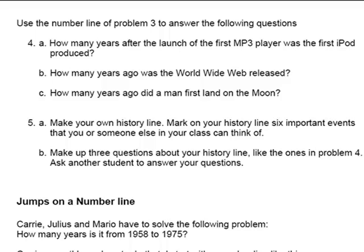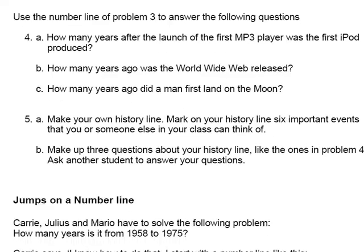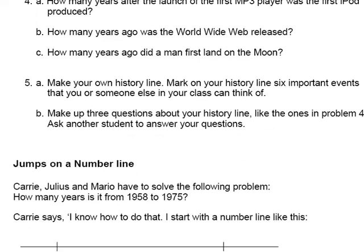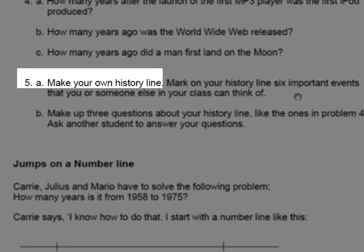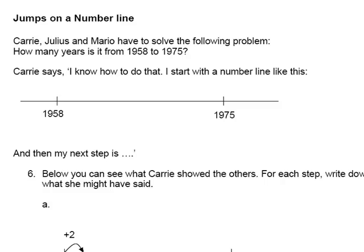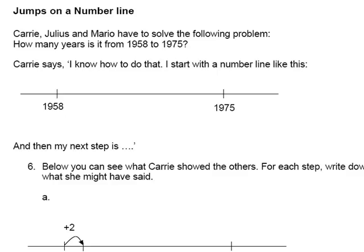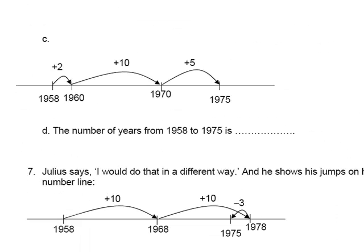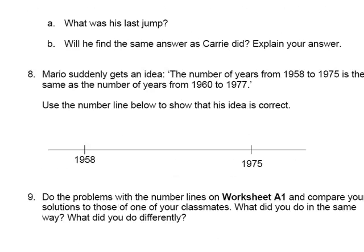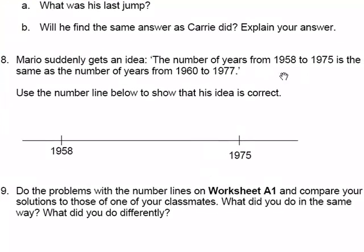And this really is the power of the number line for these students who often, even at age 15, find that vertical algorithm very tricky. And so there's a little bit of practice here with that idea of jumping up on the number line from the lower number up to the higher number. And they have to make their own history line with their own important events. I quite enjoy doing that. And then one of the features of these materials is very much to focus on student strategies and the various student strategies. And the next couple of questions are forcing that issue. So we've got Carrie saying, this is how I do it. And you then have to describe Carrie's approach. And then you've got Julius doing it a different way and Mario making another suggestion.